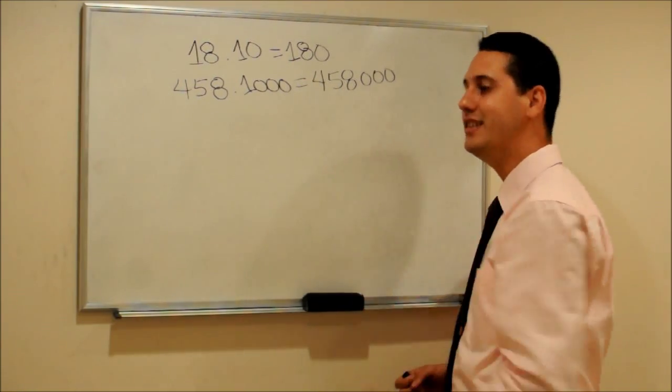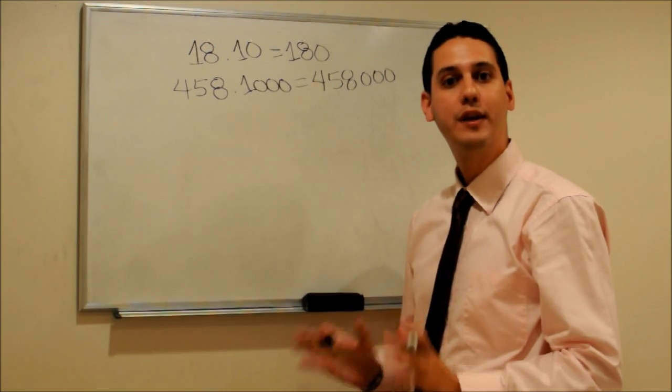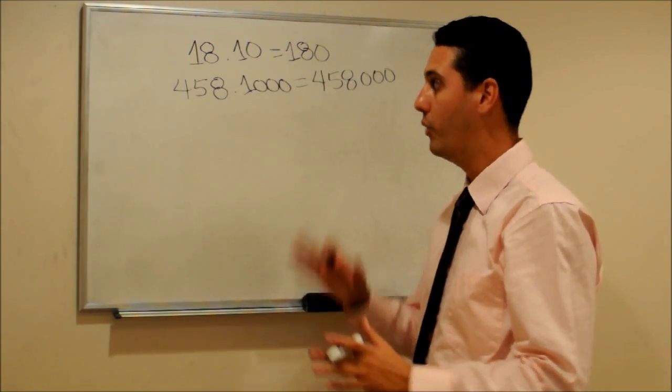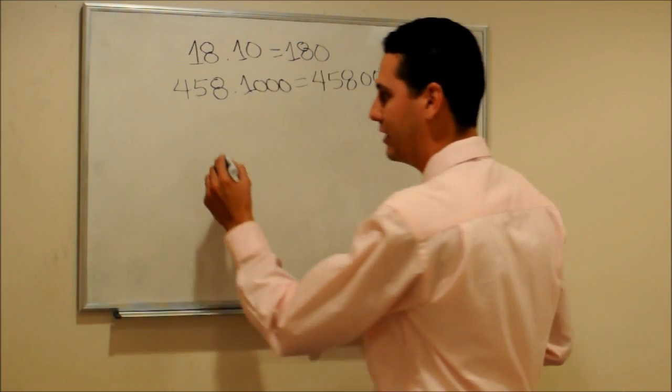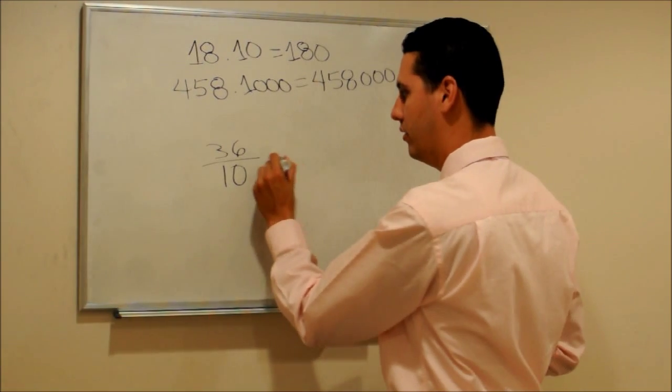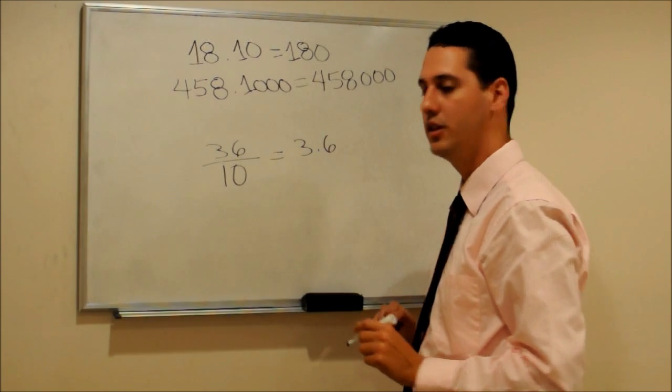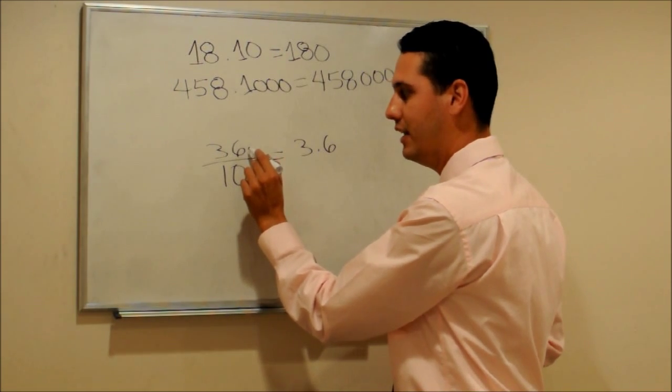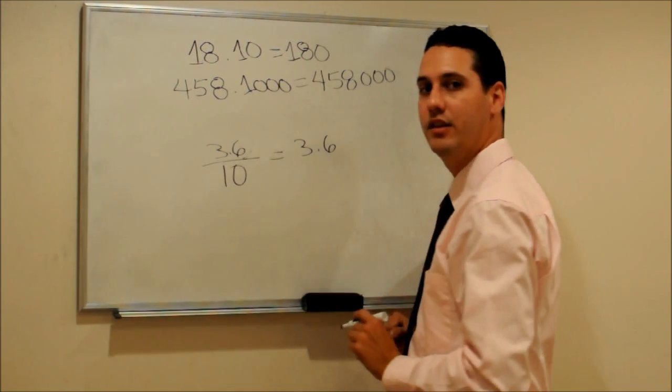Actually, this is easy because 1000 is considered a power of 10. What if we want to do divisions by 10 and by 1000? For example, let's say we want to divide 36 by 10. The answer would be 3.6 because what you have to do is just move the decimal one place to the left.